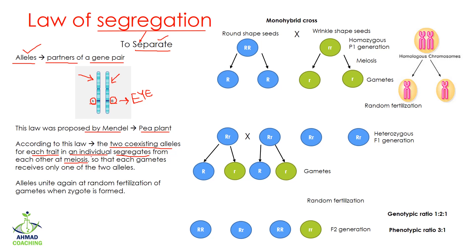One allele will go into one cell or gamete, and the other allele will go to the other gamete, so each gamete receives only one of the two alleles. Here we can see we have RR, which is round-shaped seed — this plant produces round-shaped seeds. The alleles controlling round-shaped seed are capital R capital R, with one R on each homologous chromosome.